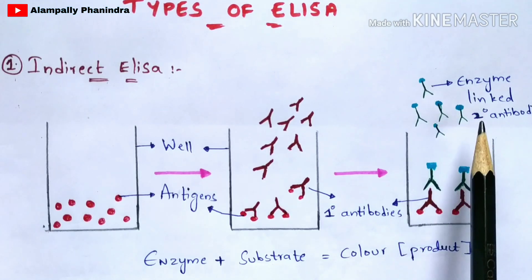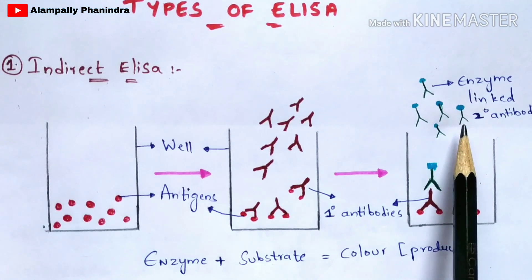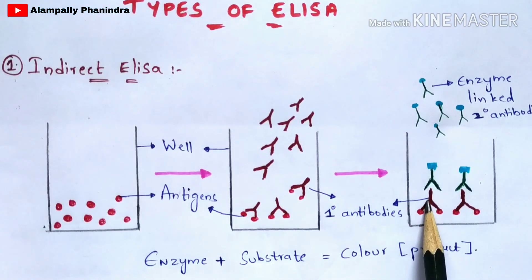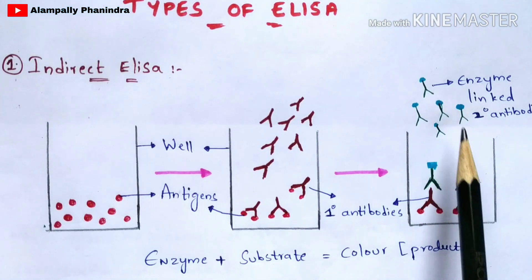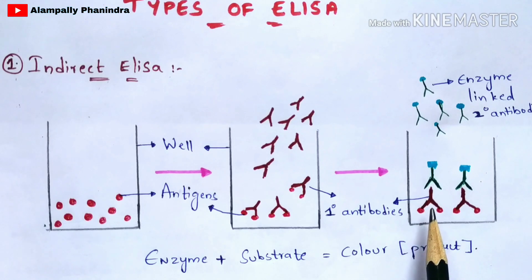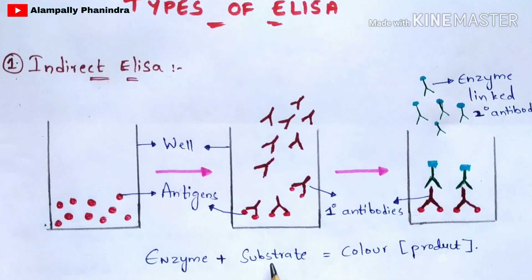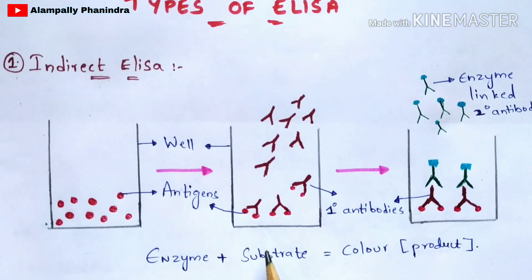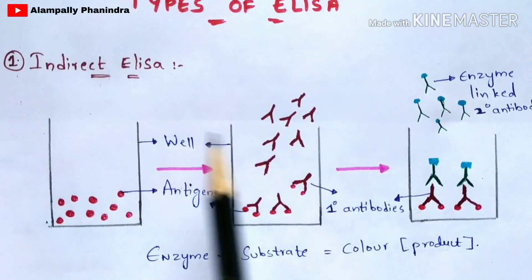In the next step, we add enzyme-linked secondary antibodies. Since we already used primary antibodies, these second ones are called secondary antibodies linked with an enzyme. The secondary antibodies are also called anti-antibodies because they interact with the primary antibodies. These enzyme-linked secondary antibodies bind to the primary antibodies. The enzyme then reacts with the strong acid substrate to form a color product, indicating the presence of antibodies. This is the indirect ELISA test.